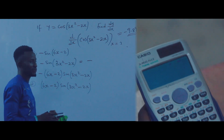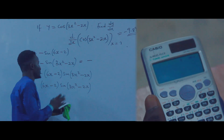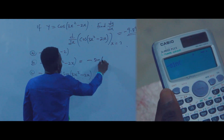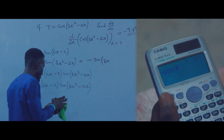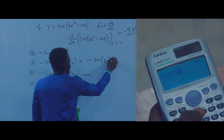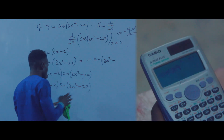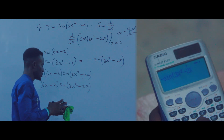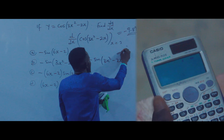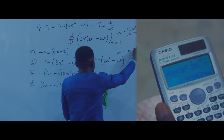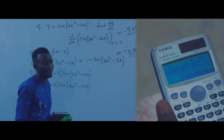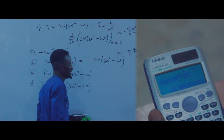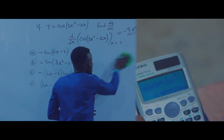Press AC and go to option B. Press minus, then press sin to open the bracket, then press 3, then Alpha X squared, then minus 2, then Alpha X. Close the bracket and press equals. Option B gives minus 0.989, which is not the same as minus 9.89. So option B is not the answer.